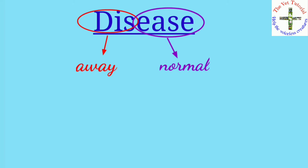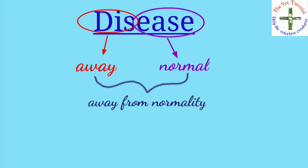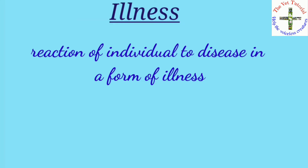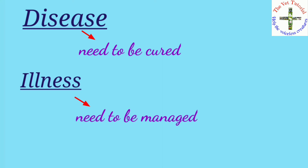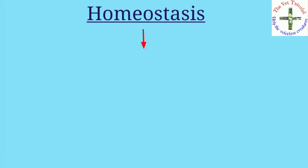Disease is a condition in which the individual suffers from discomfort. Illness is a reaction of an individual to disease. Disease is something that needs to be cured, such as infection, injury, toxic exposure, or cell degeneration. Illness is something that needs to be managed, such as feelings of pain, discomfort, distress, weakness, or fatigue.